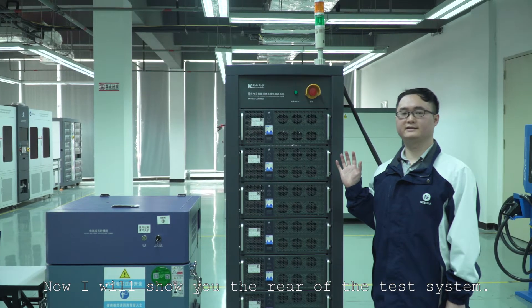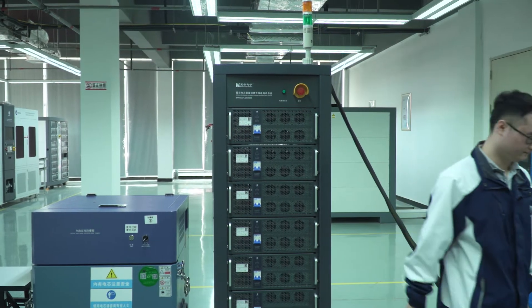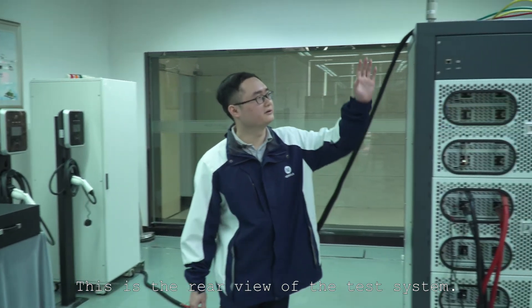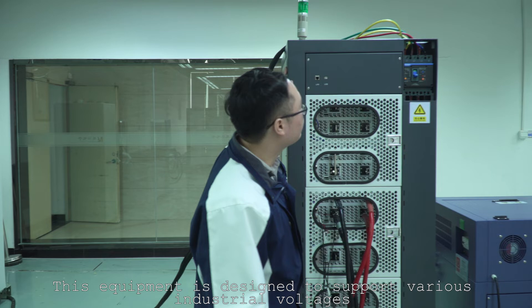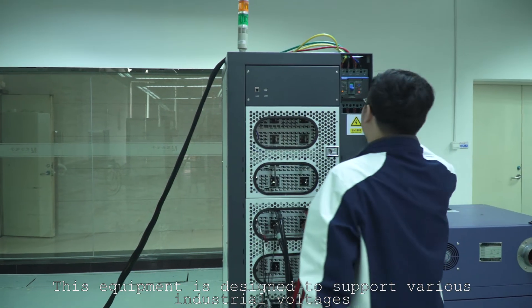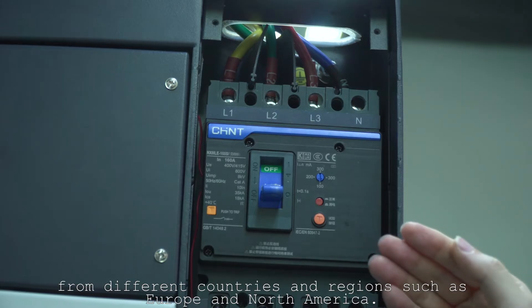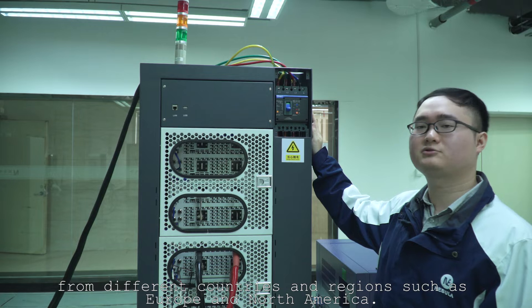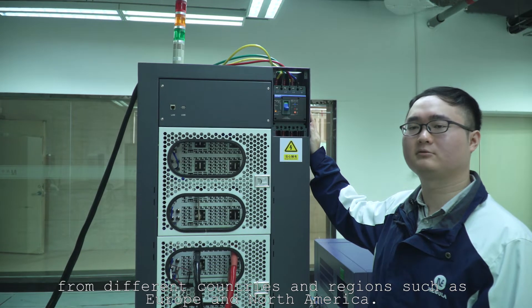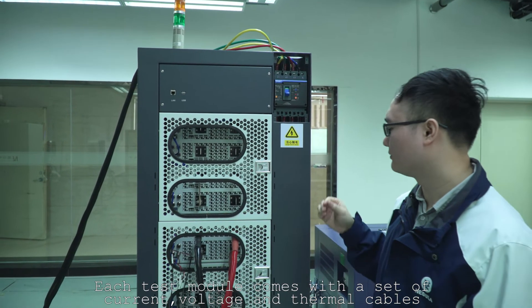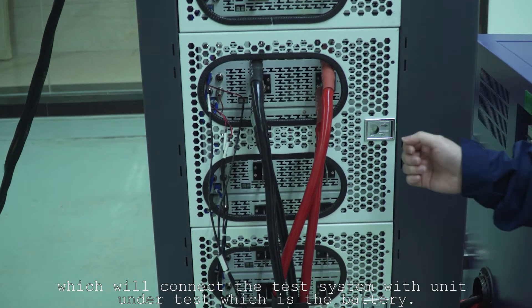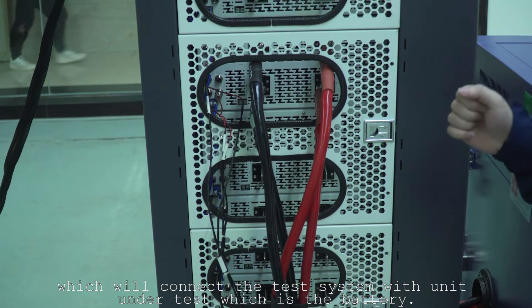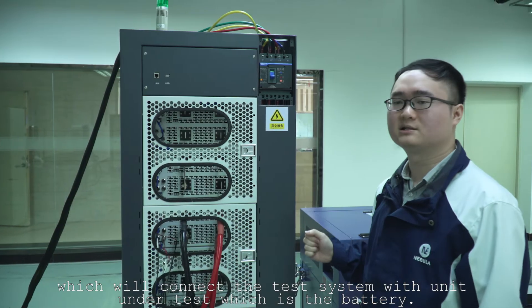Now I will show you the rear view of the test system. This equipment is designed to support various industrial voltage from different countries and regions, such as Europe and North America. Each test module comes with a set of current voltage and thermal cables, which will connect the test system with unit under test, which is the battery.